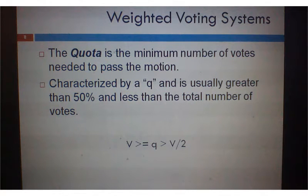The quota is the minimum number of votes needed to pass the motion. And we're generally just going to call that Q. And we'd like it to be greater than 50% and less than the total number of votes. So that's a good area to be in for that.